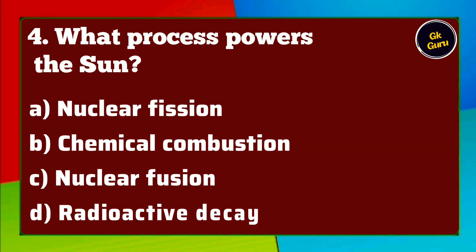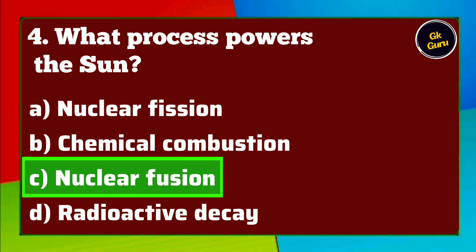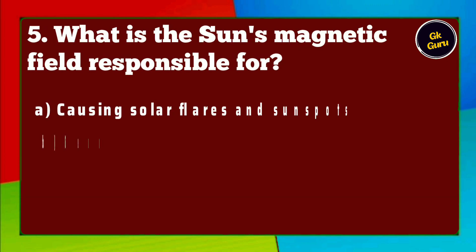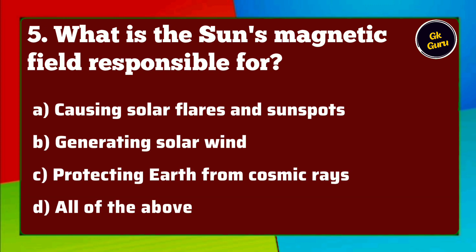What process powers the sun? A. Nuclear fission B. Chemical combustion C. Nuclear fusion D. Radioactive decay. Answer C. Nuclear fusion.